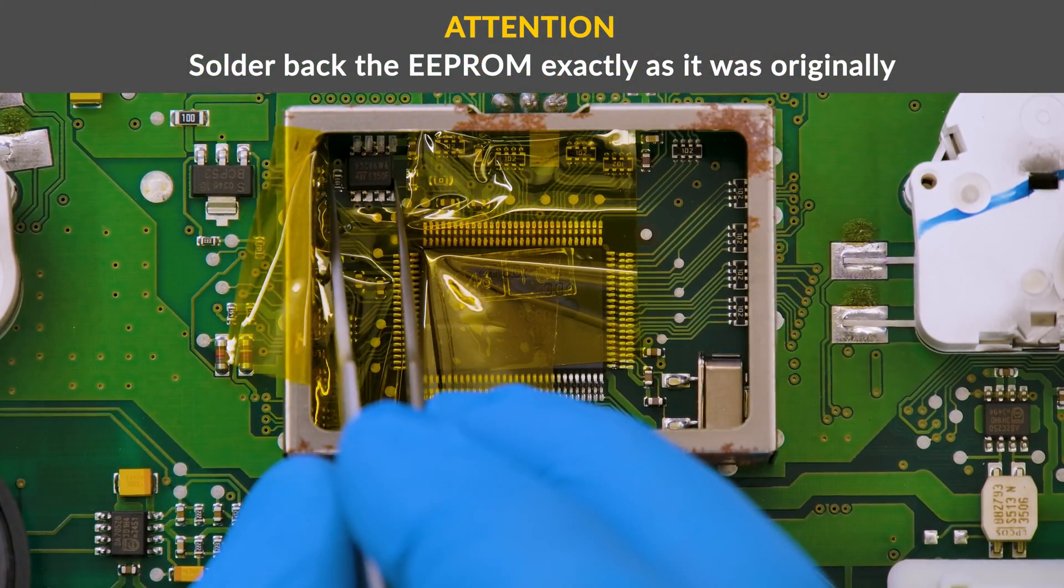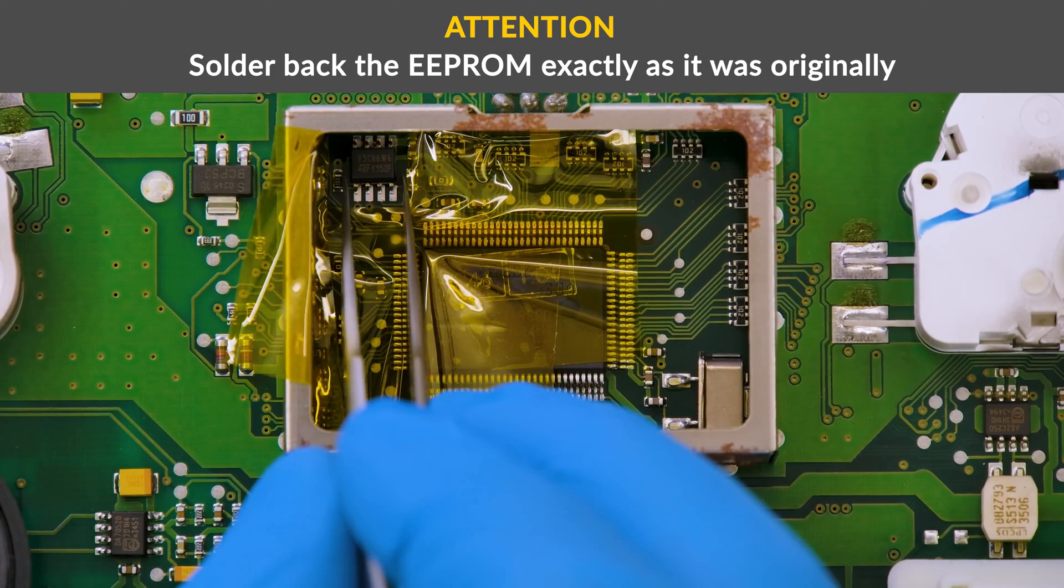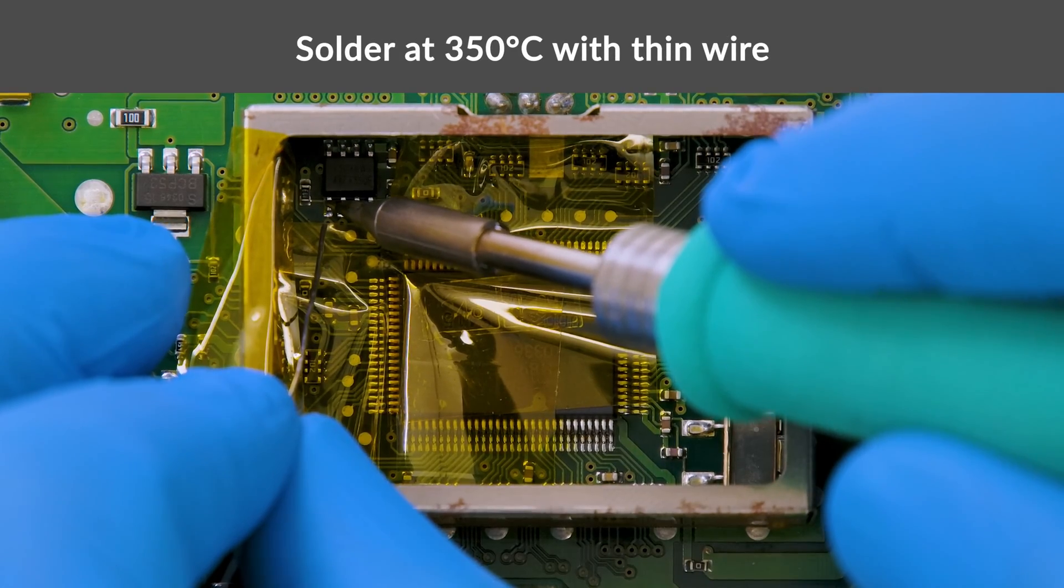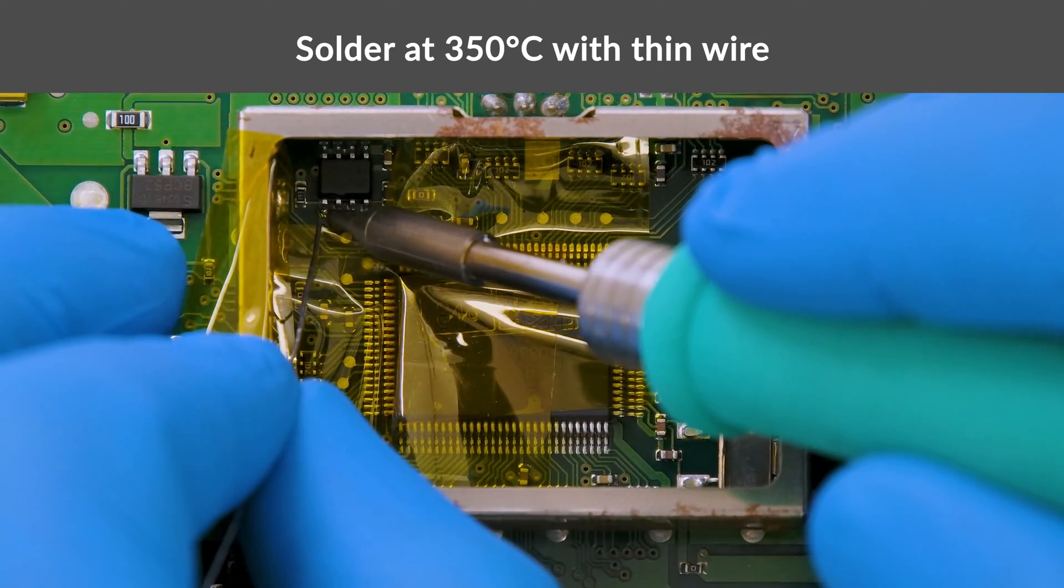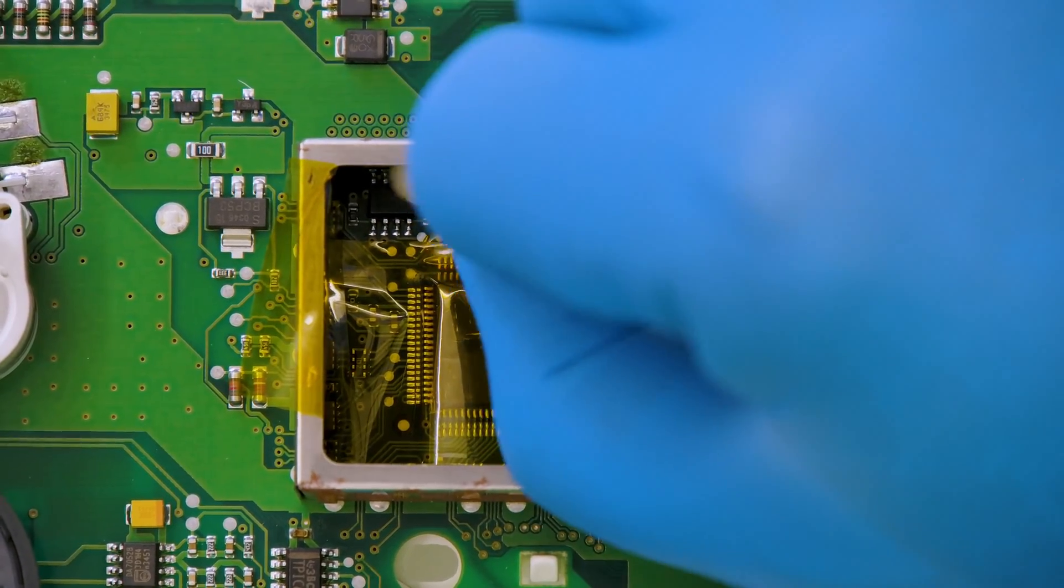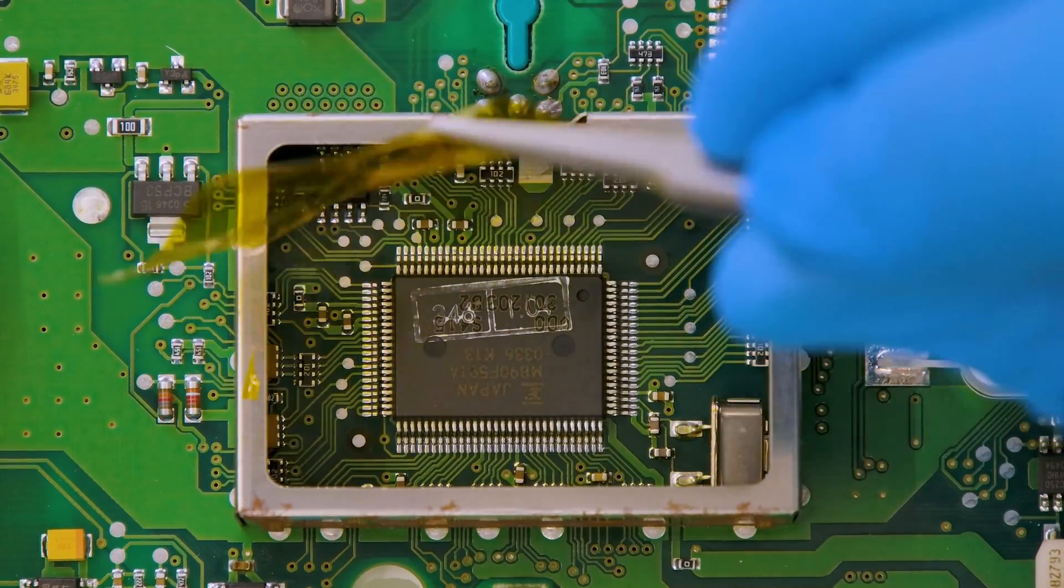With the tweezers, position the EEPROM on the PCB as it was originally, and solder it using a soldering iron with conical tip at 350 degrees. Clean again with some solvent. Remove the Kapton tape.